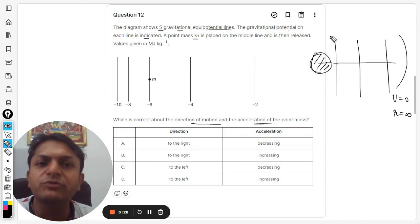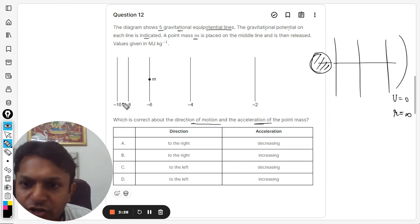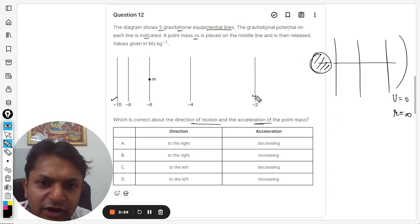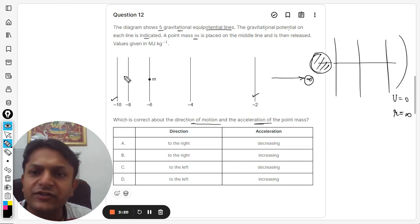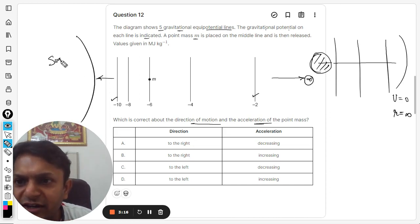So these potentials, they are negative, obviously. And obviously when you come near to the Earth, it becomes more—it has a higher value. So here you have minus 10 and here you have minus 2. It means that you keep on going and you are going towards infinity. And you keep on going like this, so you are going to hit the surface of the planet.